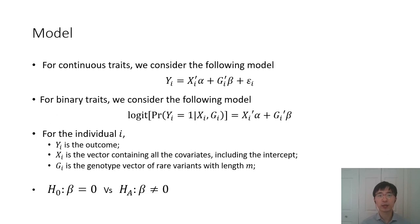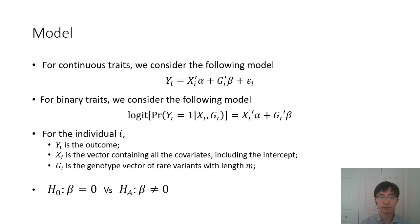Here is the model for gene-based tests. For continuous traits, we consider a linear regression model, and for binary traits, we consider logistic regression. Y is the outcome, X_i is the vector containing all covariates including the intercept, and G_i is the genotype vector of rare variants with length m. We are interested in testing whether beta equals zero or not.